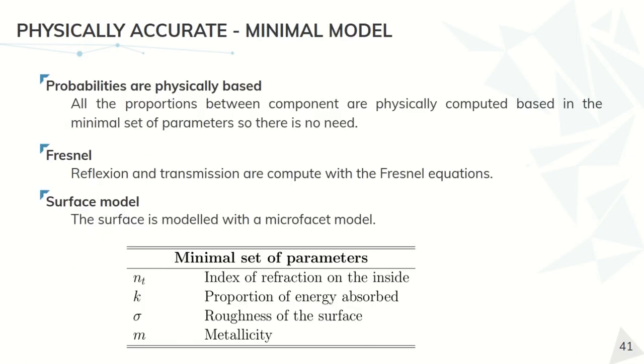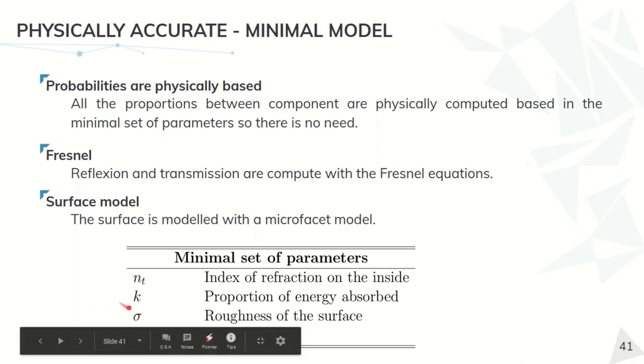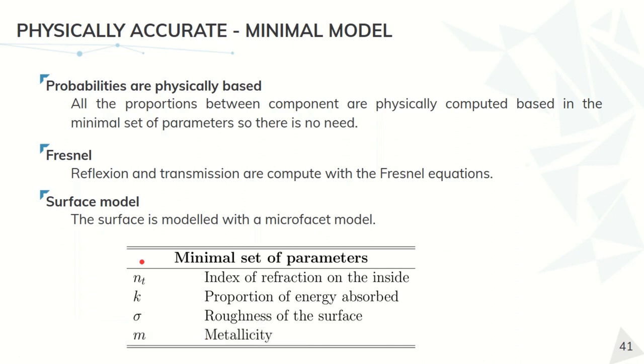For this, we propose a physically accurate minimal model in which you can define all the important physics only with four parameters. We are going to have here the two physical parameters that we described in the previous one, and all the energy distributions are computed based on physical laws. More specifically, on the Fresnel equations, and also for the surface, we model it with a microfacet model. For this, we can do that only using two parameters to describe the material surface, as is the roughness and the metallicity.